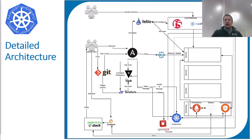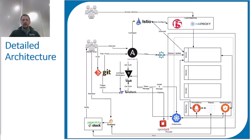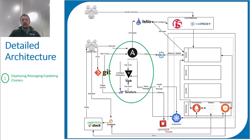Looking at an example: you have a Git repository with different tooling. This is an OpenStack infrastructure, but it could be public cloud, private cloud, or any infrastructure. You have a vanilla Kubernetes, but it could also be OpenShift, Rancher, or another Kubernetes distribution. In the DevOps approach, for deploying, managing, and updating clusters, you use Ansible, Terraform, Vault, and Git. When you want to create a cluster, you already have a configured way of deploying the cluster and infrastructure.